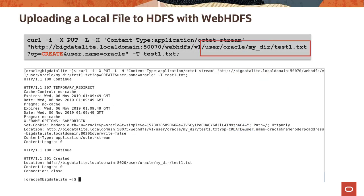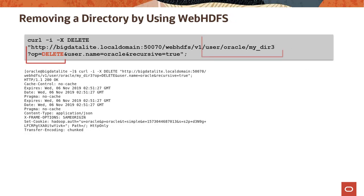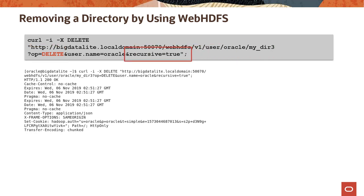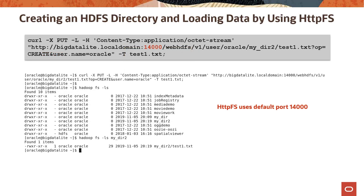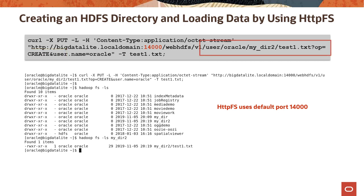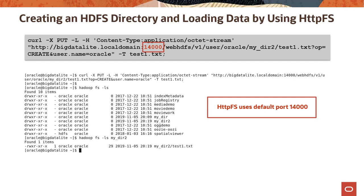In this example, we upload the test1.txt file to the mydir HDFS directory — if mydir does not exist, it will be created. In another example, we remove the mydir3 HDFS directory using the recursive option to remove the directory and its contents. Finally, we create an HDFS directory and load the local test1.txt file to the new directory using HTTPFS. If the directory does not exist, it will be created. HTTPFS uses the default port 14000.